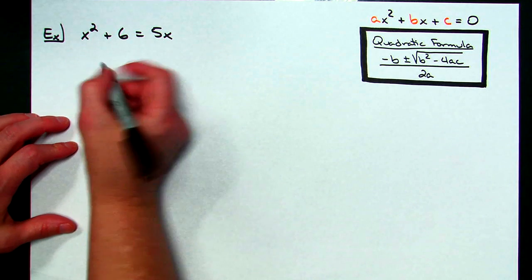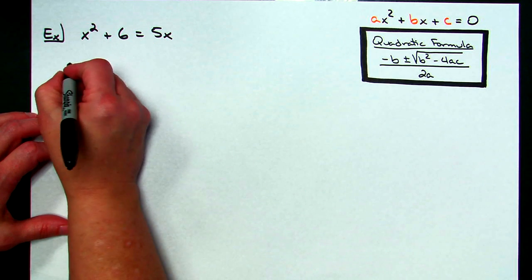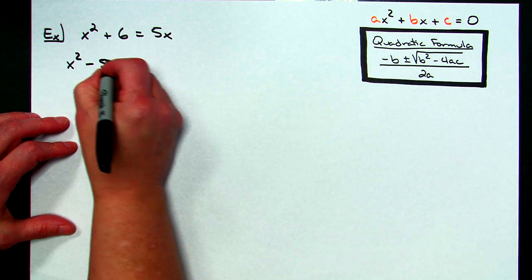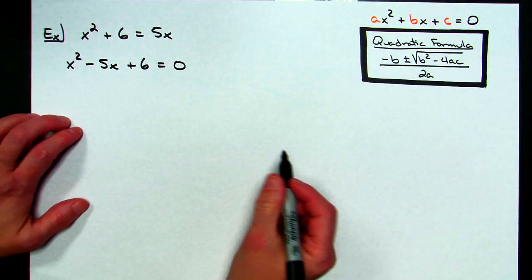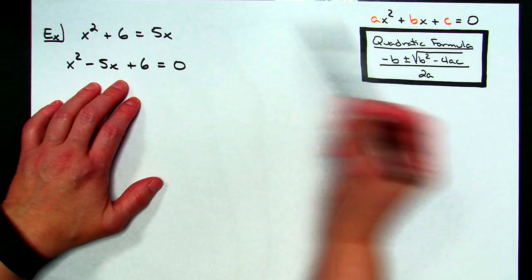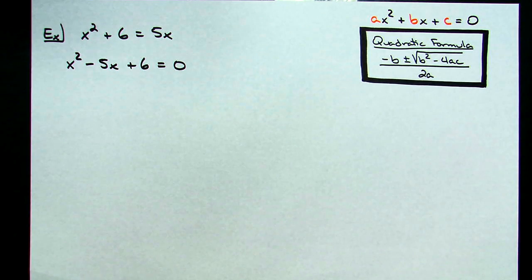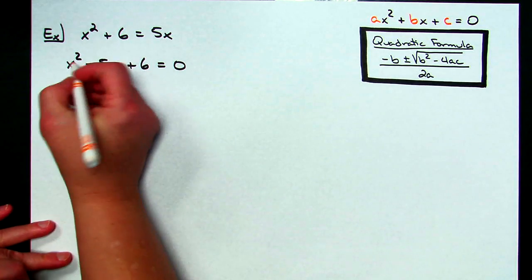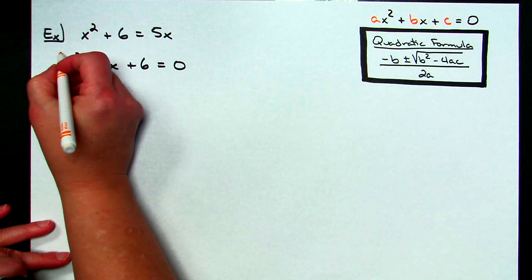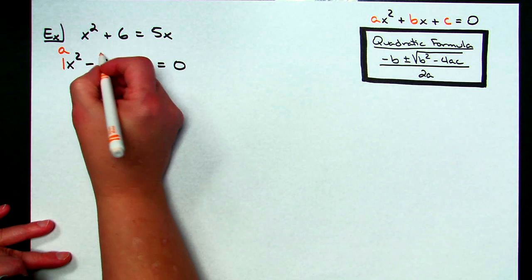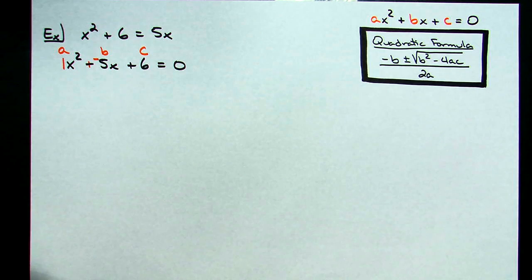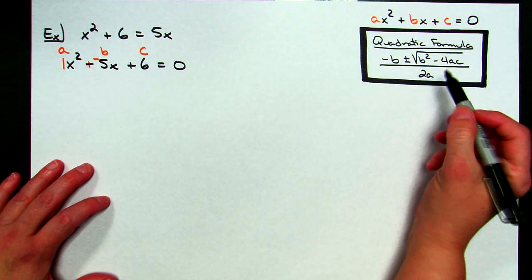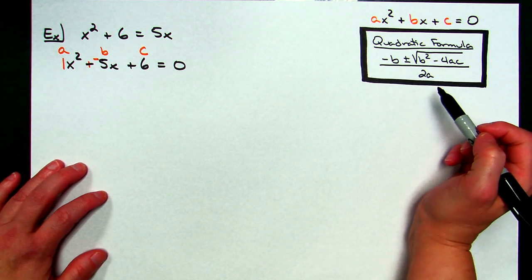I'll subtract 5x from both sides of the equation, placing it in the middle: x squared minus 5x plus 6 equals 0. Now I can identify my variables. There's an imaginary coefficient of 1 for a, b is negative 5, and c is 6. Then it's just a matter of plugging everything into the quadratic formula carefully and working it out.